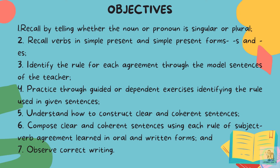Here are the objectives. First, recall by telling whether the noun or pronoun is singular or plural. Second, recall verbs in simple present and simple present forms, S and ES. Third, identify the rule for each agreement through the model sentences of the teacher. Fourth, practice through guided or dependent exercises identifying the rule used in given sentences.